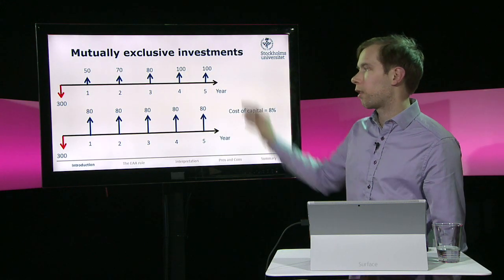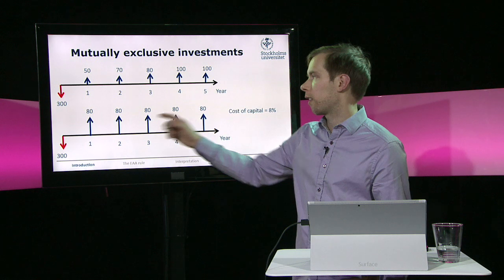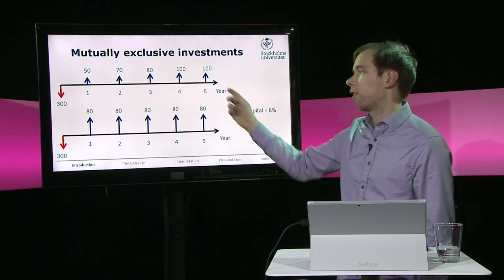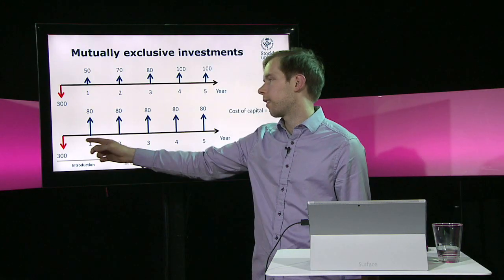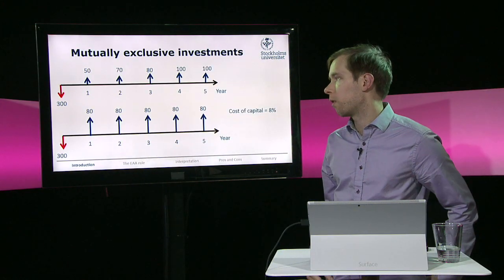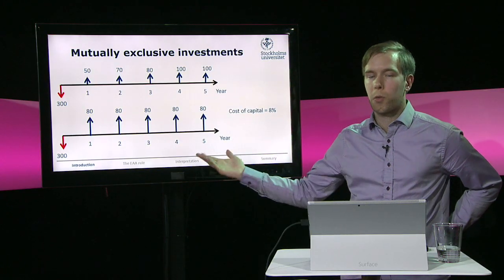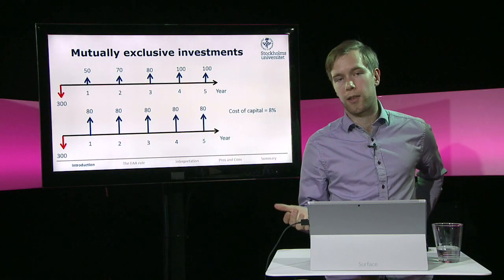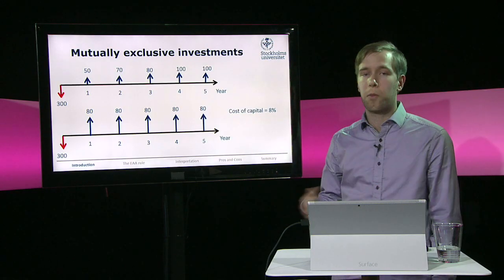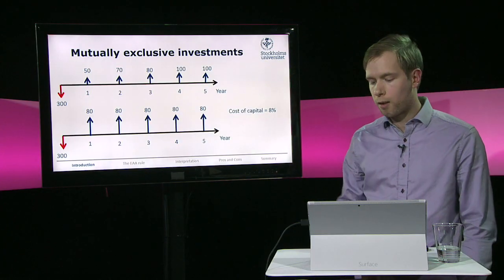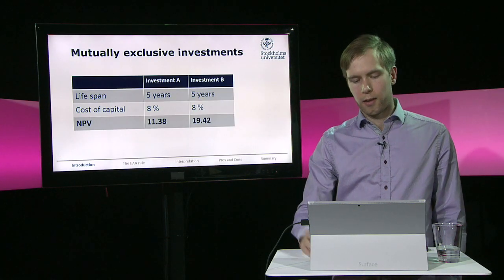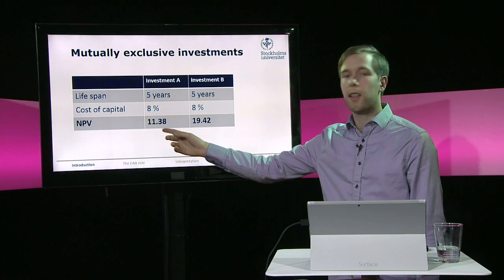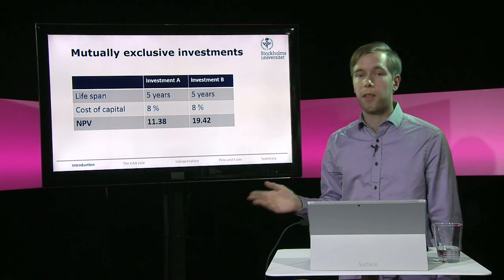Let's take an example. We have two different investments here. One has cash flows of 50 in year one, 70 in year two, 80 in year three, and 100 in years four and five. The second one has 80 every year. They both cost 300. If these are mutually exclusive, which one should we choose? Well, they have the same lifespan, so we should use the net present value — compute NPV of both and take the one with the higher NPV. The NPV for investment B is much higher than for investment A, so we should choose investment B.